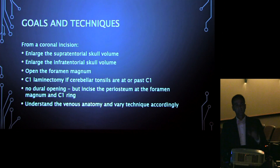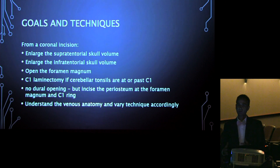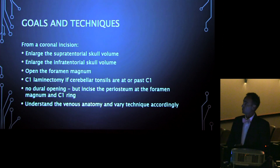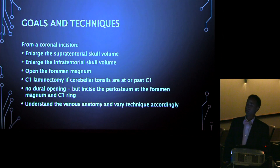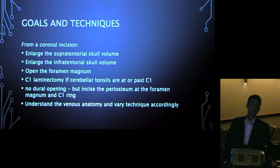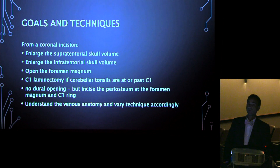As opposed to a basic operation just to decompress a Chiari, what we're doing here is increasing the entire skull volume — not just the posterior fossa volume, but the whole skull volume. This is all done from a coronal incision over the top of the head. You enlarge the supratentorial and infratentorial skull, open the foramen magnum, and can do a C1 or even C2 laminectomy depending on how far the cerebellar tonsils descend. From this approach, we don't open the dura. For a standard Chiari with direct access, I typically do open the dura, but from this approach the extradural decompression can be just as effective.